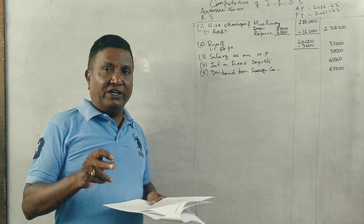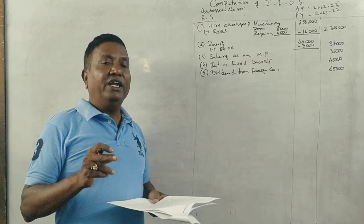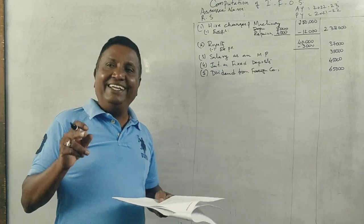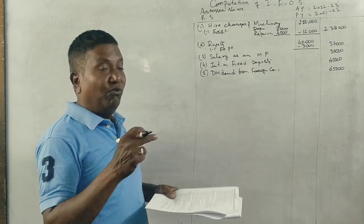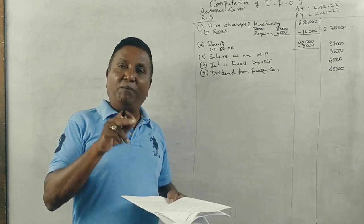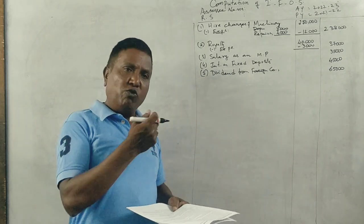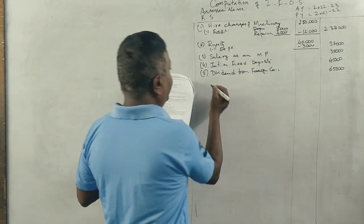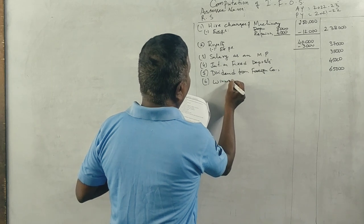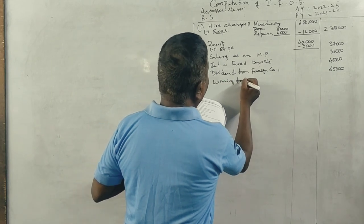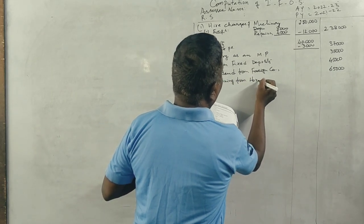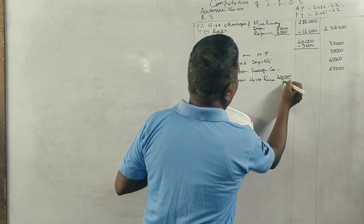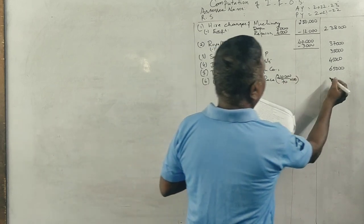Tax deducted at source. Suppose if he is given dividend from foreign company net Rs. 50,000 and TDS Rs. 15,000, then we do 50 plus 15, total Rs. 65,000. But now he's given Rs. 65,000. Next: winning from horse race. Rs. 2,10,000 is the net amount given. Gross would be Rs. 3,00,000.